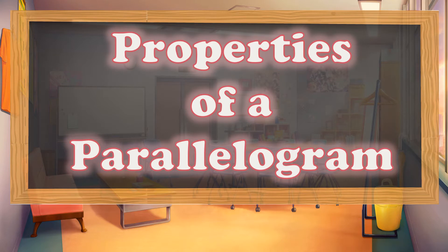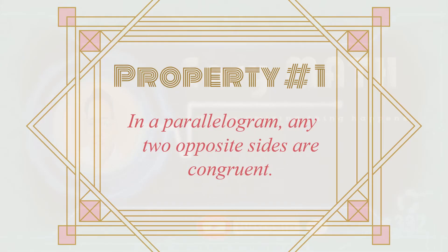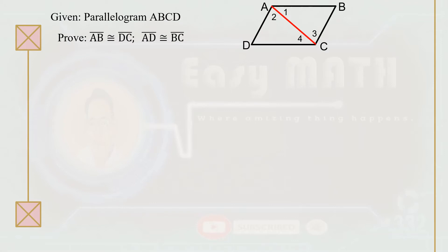In this lesson, we're going to prove that the following properties of a parallelogram exist by using a two-column proof. Property number one. Now, let's prove the first theorem using a two-column proof.